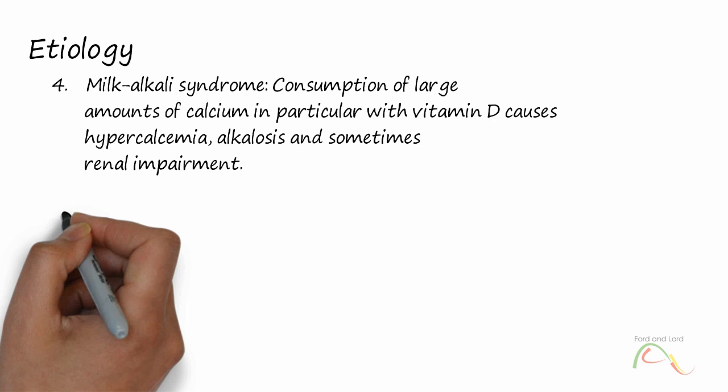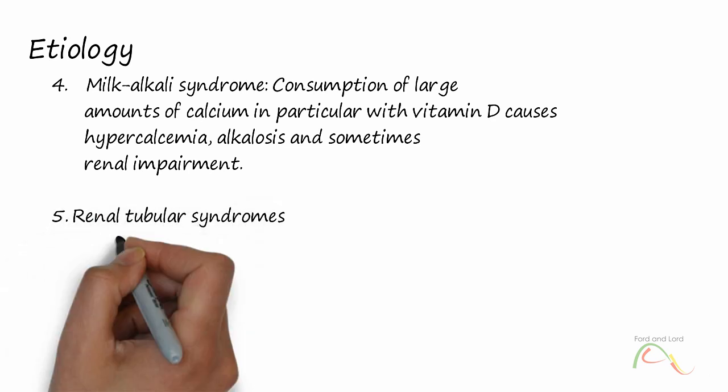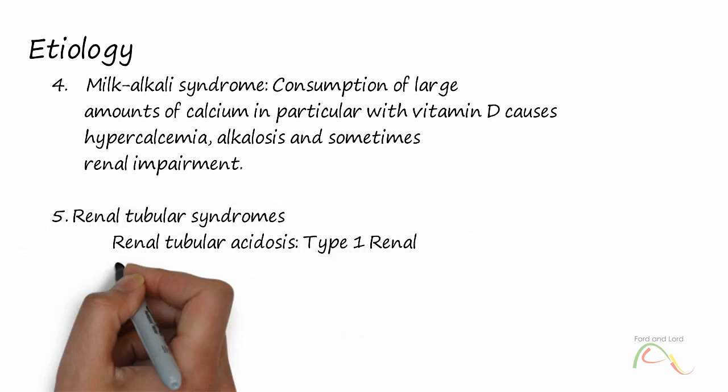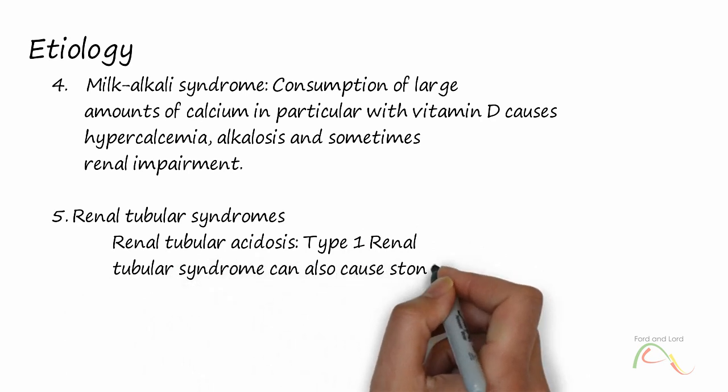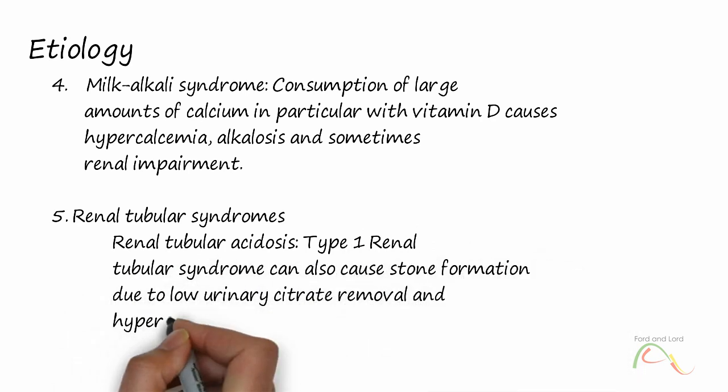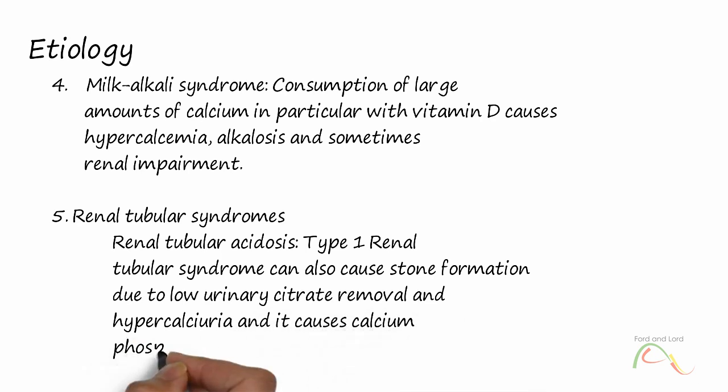Renal tubular syndromes. Renal tubular acidosis: Type 1 renal tubular syndrome can also cause stone formation due to low urinary citrate removal and hypercalciuria, and it causes calcium phosphate stones.